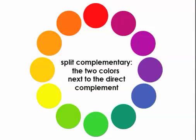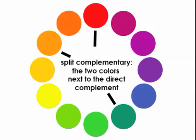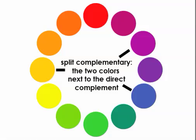A little bit more complex is split complementary, which means one color you choose and then the two colors directly adjacent to its direct complement. So an example of that would be green with red-orange and red-purple. A little bit more complex, but if you think about those three colors, you can probably find a place where they have been used together. You can also see that red and yellow-orange goes with blue-green. If it's helpful, you can just print out a color wheel and draw lines and see what works together.